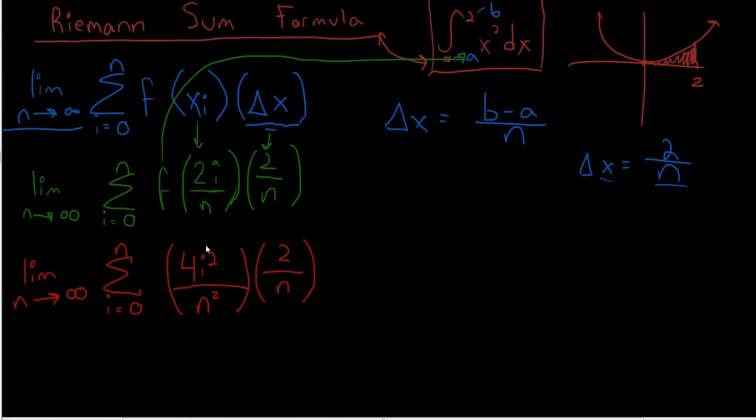the important thing is to bring out everything other than i. So if you know about sums, you can bring things in front, but we will leave i. So what this looks like is the limit as n goes to infinity. Now we're going to bring out the 4, we're going to bring out the 2, so that's 8.